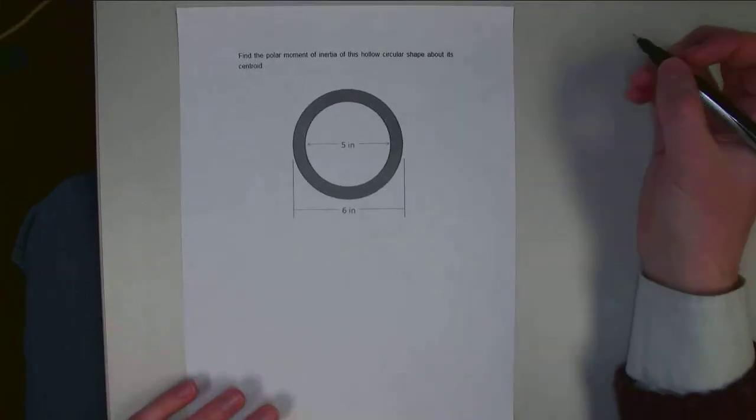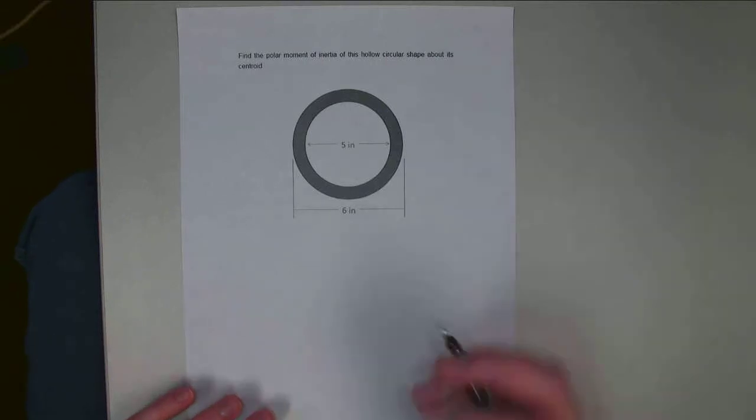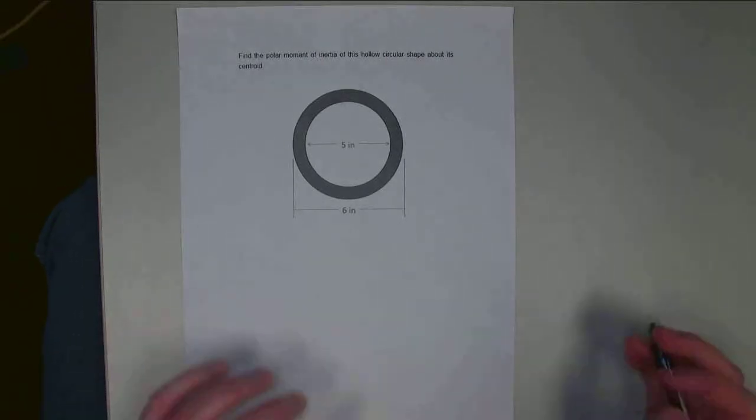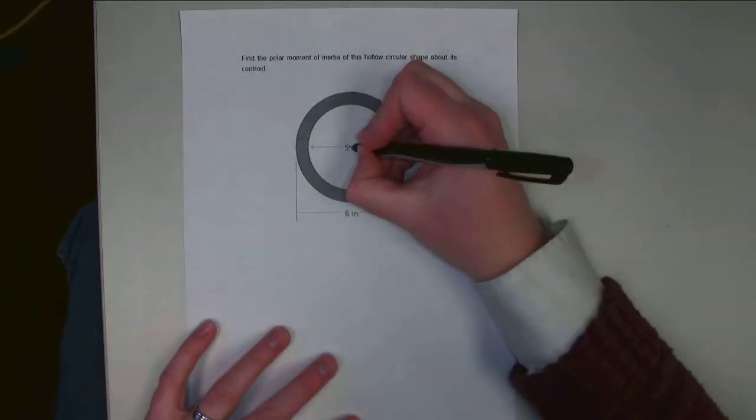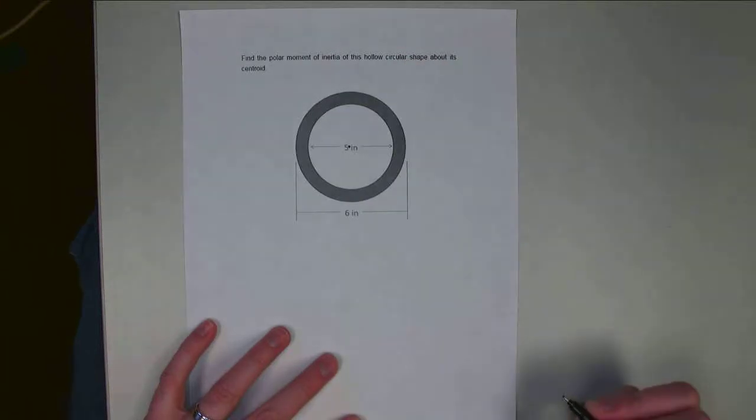We're asked to find the polar area moment of inertia of this circular shape about the center point, and the center point is going to be the center of my circle here.